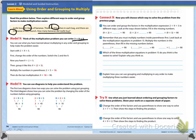Now we can also use what we've learned about multiplying in any order and grouping to help make this easier. So we start with two times nine times five. Now we're going to change the order of the numbers — we are going to switch the two and the nine. And so now we have nine times two times five.